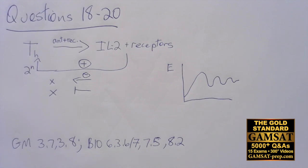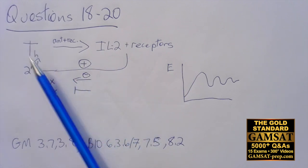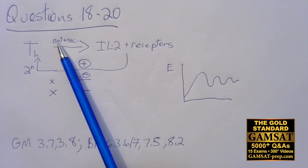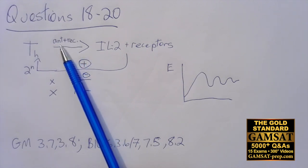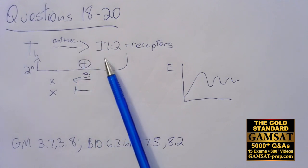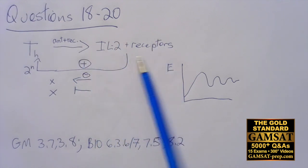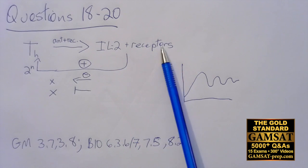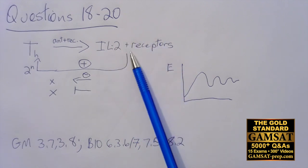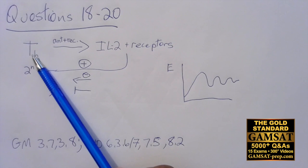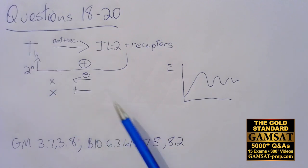And so even on the real exam, in the space, in the margin, I would probably just draw this simple part here, you know, just to put I have the T helper cell, there's going to be the antigen that connects to the receptor. And then the consequence of this is that we get more interleukin-2 and receptors. And the consequence of this is that we end up getting more of the T helper cells being produced.